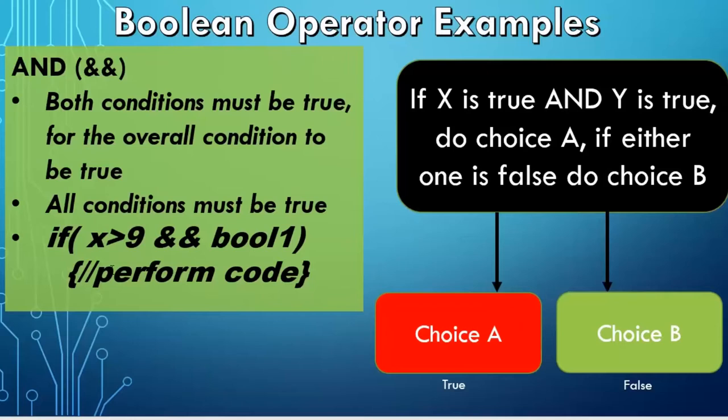I only have two conditions I'm checking: if x is greater than 9 and Boolean1 is true. It could be all sorts of different conditions—I could have multiple Boolean conditions or multiple conditions where I'm checking to see if variables are greater, less than, or equal.